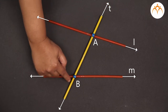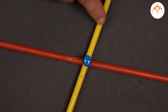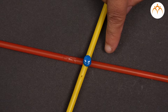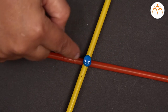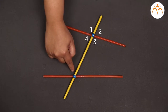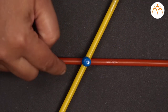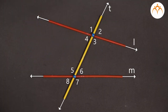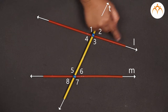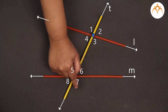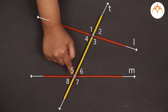When the transversal T cuts two intersecting lines, line L and line M, angles are formed at each intersection point. The first angle gets formed between these two lines, the second angle here, the third angle here, and the fourth angle here. Similarly, the fifth, sixth, seventh, and eighth angles are formed at the other intersection point. So when a transversal T cuts two intersecting lines, eight angles are formed — four angles at intersection point A and four angles at intersection point B.